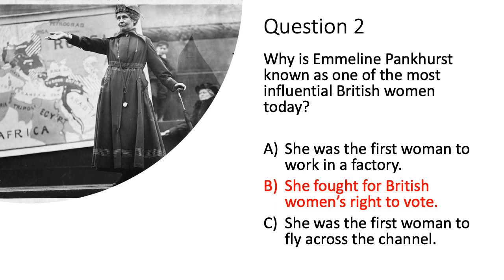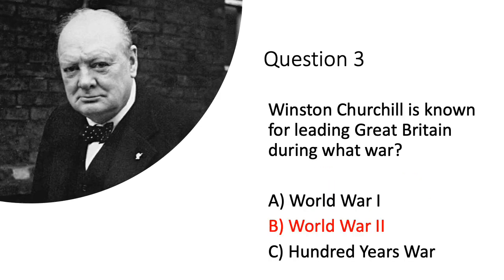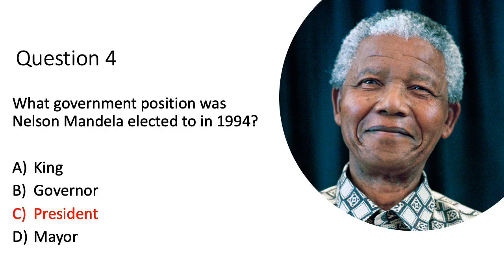She noticed as she grew older that women were treated differently to men, and so she became motivated to help change that. In 1903, she, along with her daughters, founded the Women's Social and Political Union. Question three: as said in the answer to question one, Churchill is known for leading Great Britain through World War II. Question four: Nelson Mandela was elected to become president — he became the first black president of South Africa at age 77 in 1994.